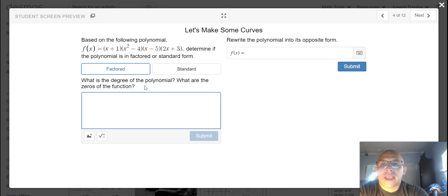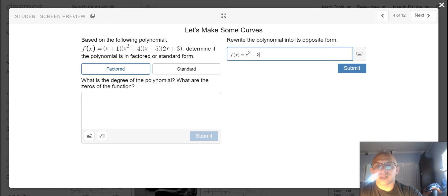After you've decided, what is the degree of the polynomial? What are the zeros of the function? And then you are tasked with rewriting the polynomial into its opposite form.